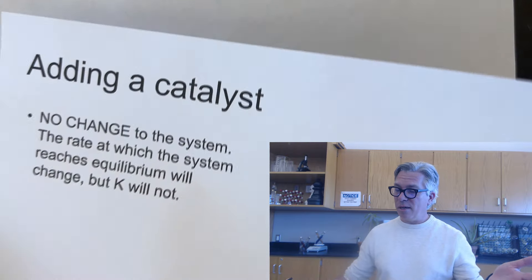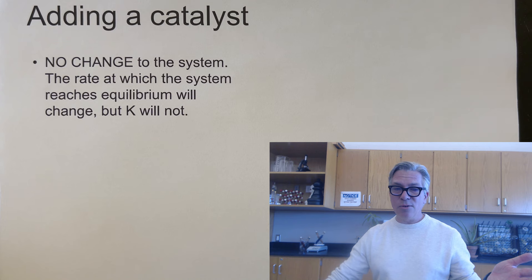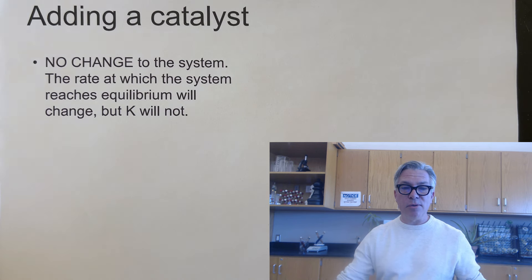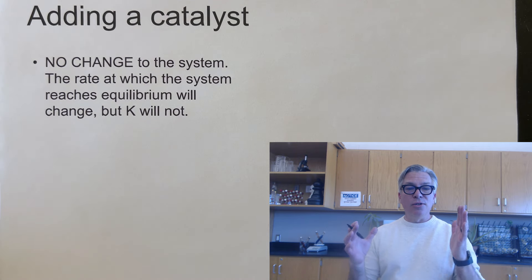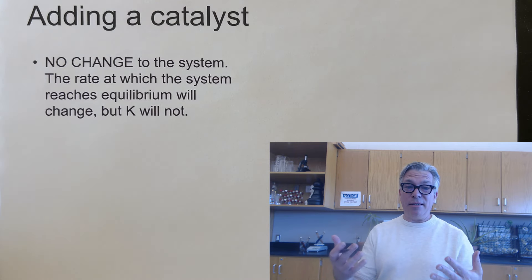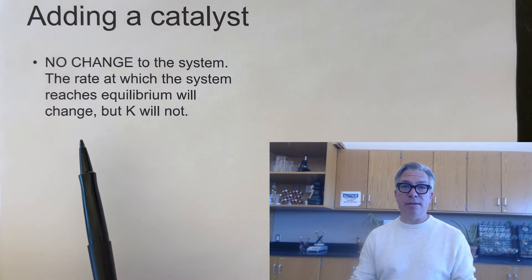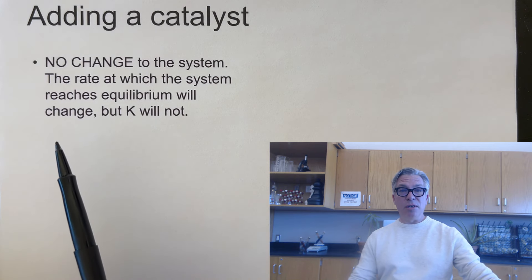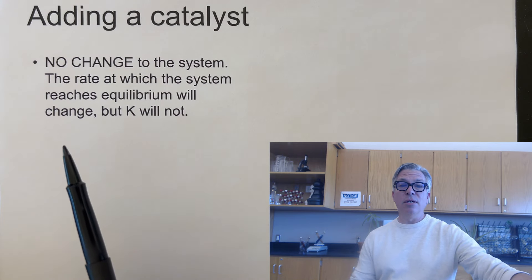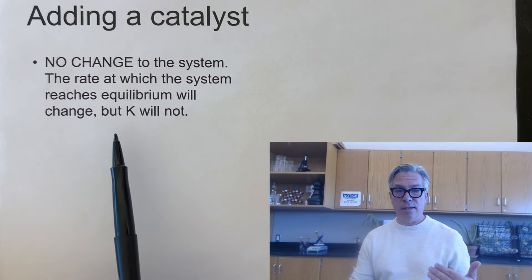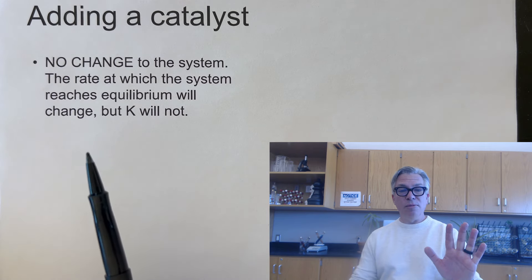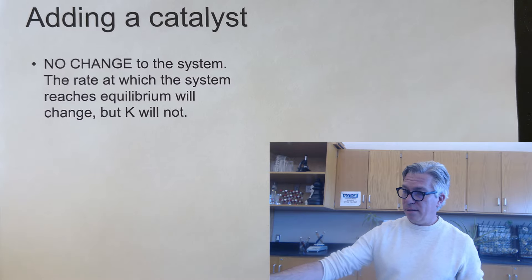Public service announcement number two: what if you add a catalyst to an equilibrium system? It'll sound really official, like something important should happen. But there will be no change to the equilibrium system. A catalyst may change the rate at which the system reaches equilibrium — it can get there faster — but it won't change the equilibrium position. Don't be fooled by it.